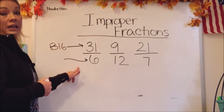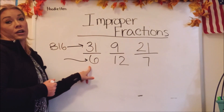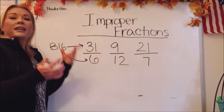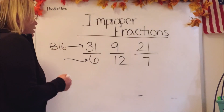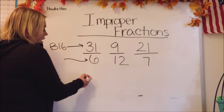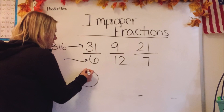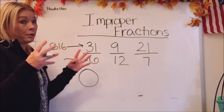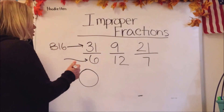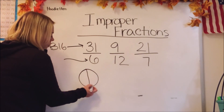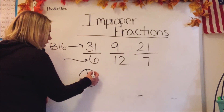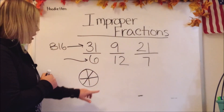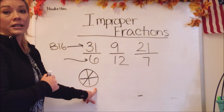This first one — 31 over 6 — is obviously bigger on top, so this is an improper fraction. Now why is it improper? Well, a fraction is talking about a part of a whole; it's not quite a whole number. The denominator tells us how many parts are in that particular fraction, so the denominator is telling us there are six parts — we just made a pie of six parts.